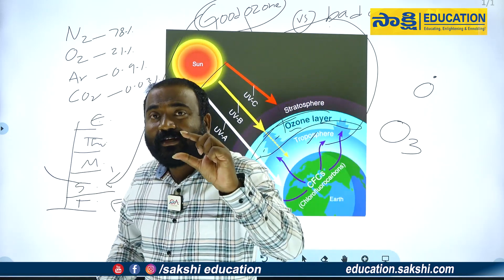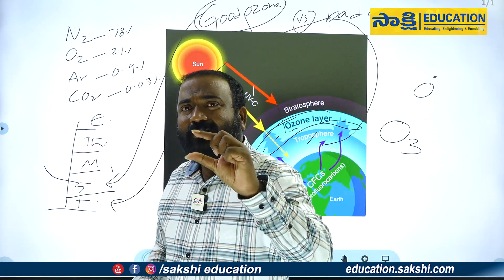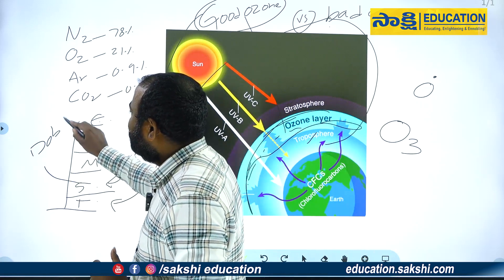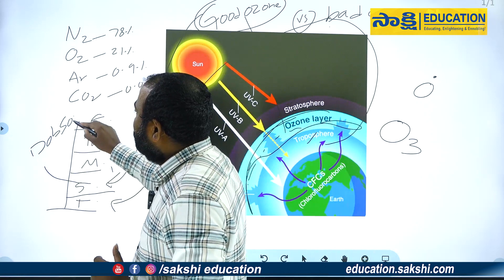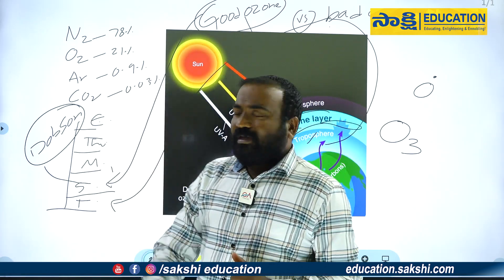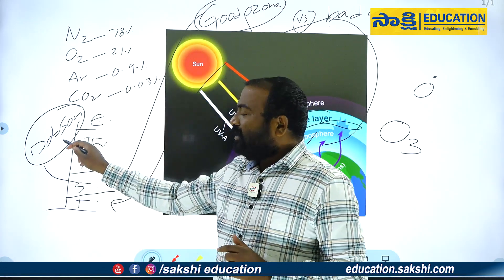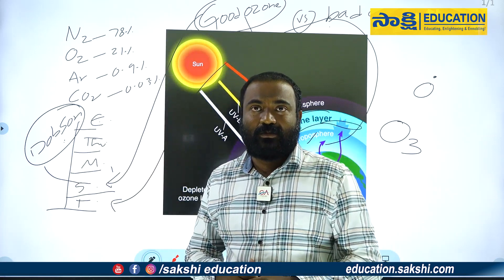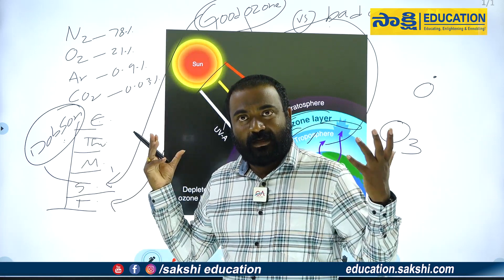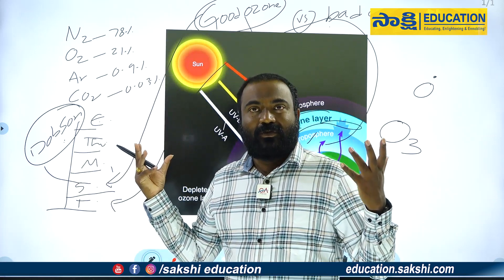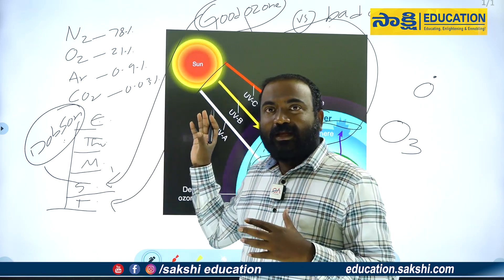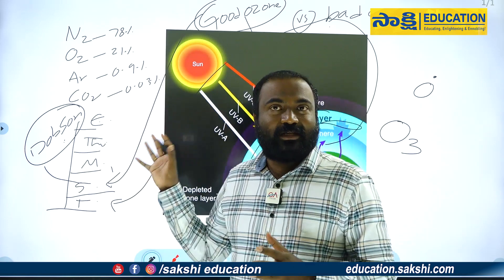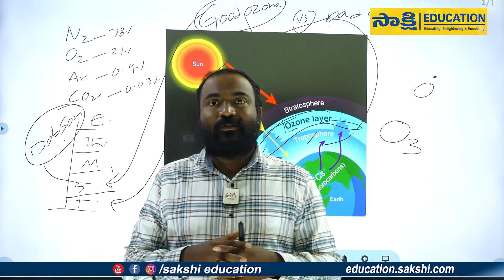A very important question: Dobson units are used to measure ozone. This is very important — Dobson units are used by the use of Dobson units. Bad ozone, good ozone — with this concept, we have a lot of exam questions here. Thank you.